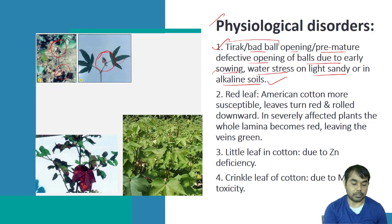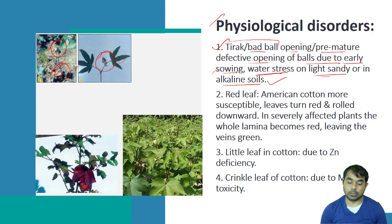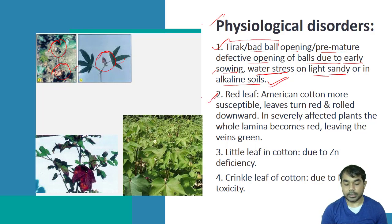The reason behind the defective boll — as already mentioned — may be early sowing, water stress, or sowing seed on light-textured soil or in alkaline soil. Now we will talk about the red leaf.